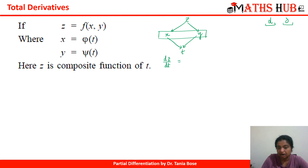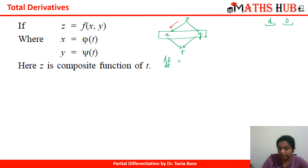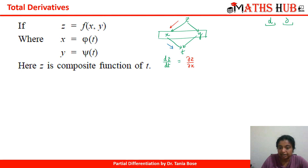How do we take the derivative of z with respect to t? We go through two channels. In the first channel, we take the derivative of z with respect to x and then x with respect to t. When taking the derivative of z with respect to x, since z also depends on y, we use the partial symbol: ∂z/∂x. Then, since x depends only on t, we use the total derivative dx/dt.